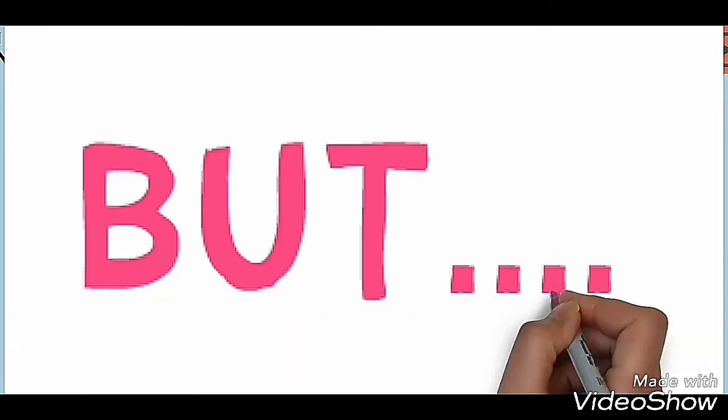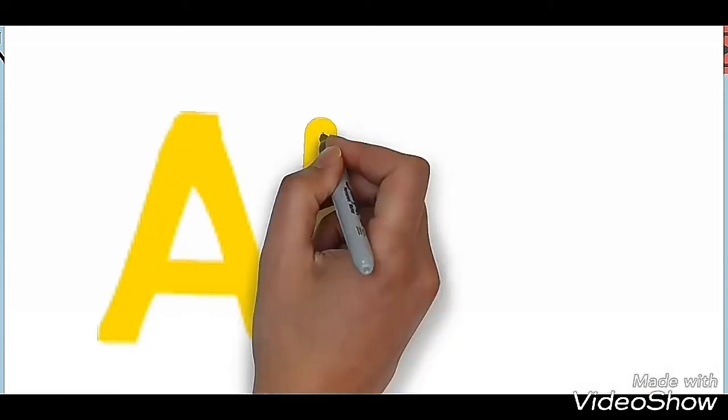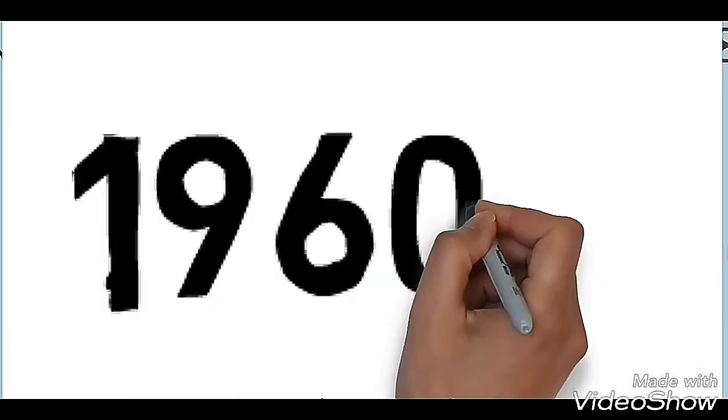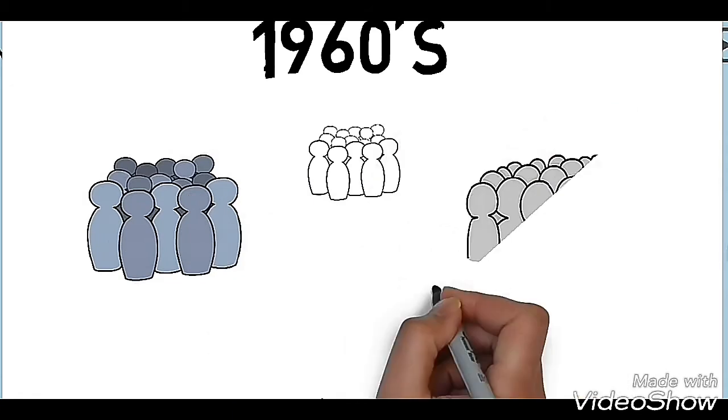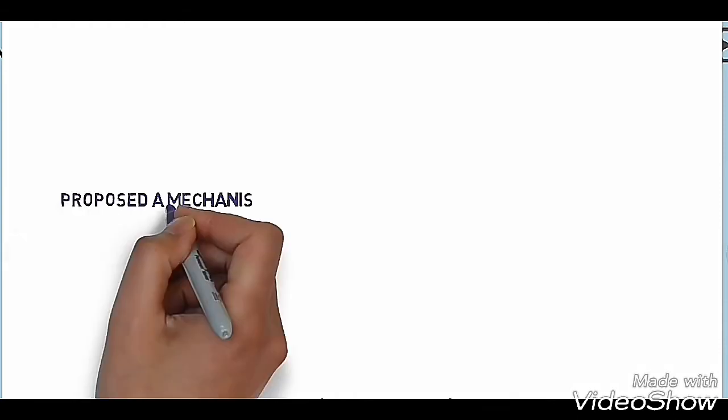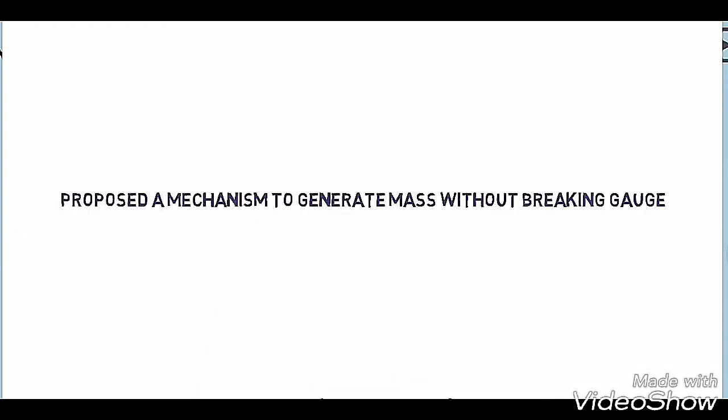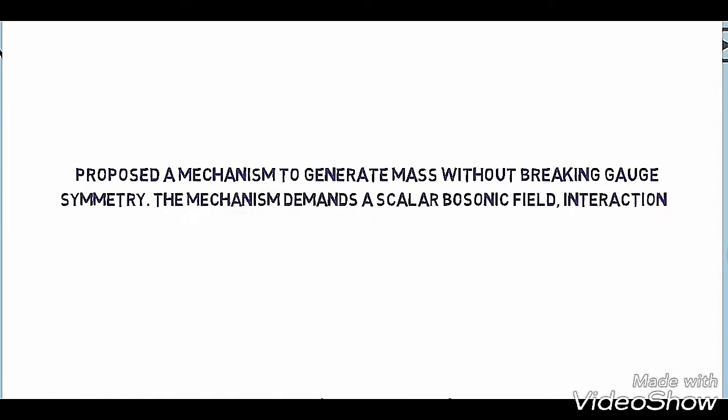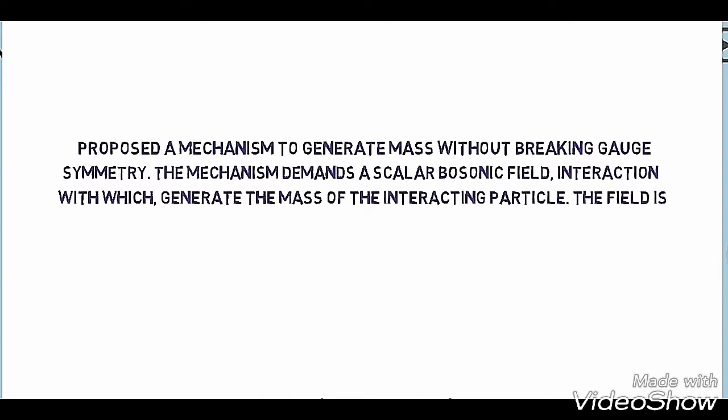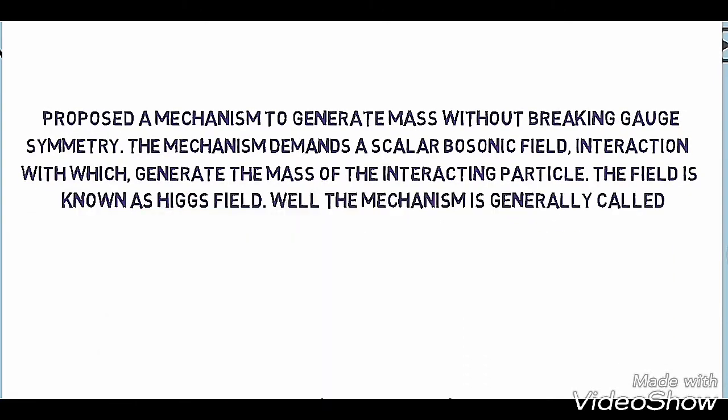But how does Higgs field generate mass? And why does Higgs field is omnipresent and have non-zero vacuum expectation value? Back in the 1960s, three independent groups of scientists almost simultaneously proposed a mechanism to generate mass without breaking gauge symmetry.